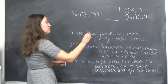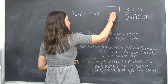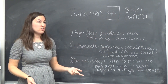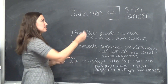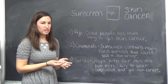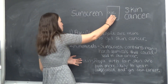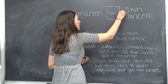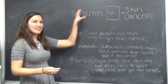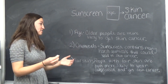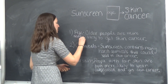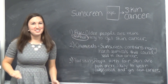Starting with age: if I put age in the box, it says that older people are more likely to get skin cancer. So I have to decide how is age related to sunscreen? Based on what it says, it's not related to sunscreen. How is age related to skin cancer? The older you are, the more likely you are to get skin cancer. Because age has nothing to do with sunscreen, it would definitely be categorized as neither.